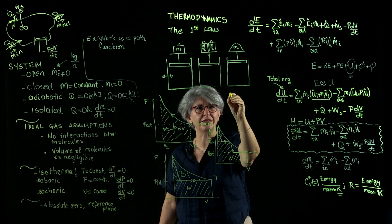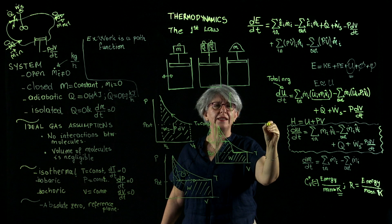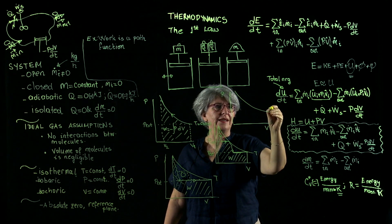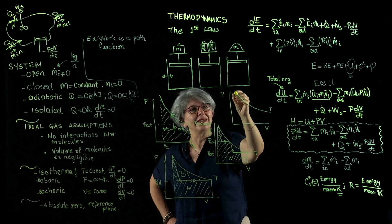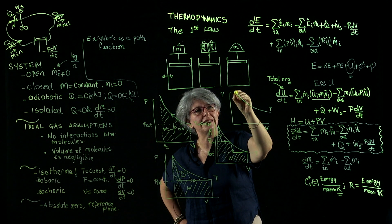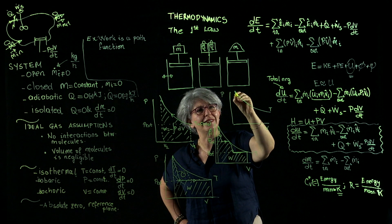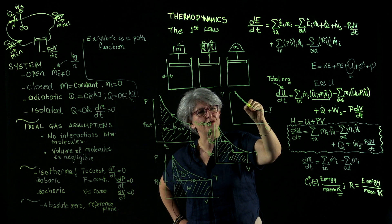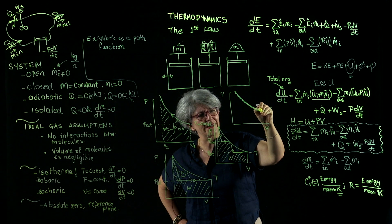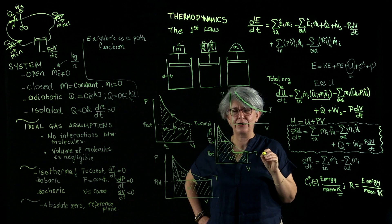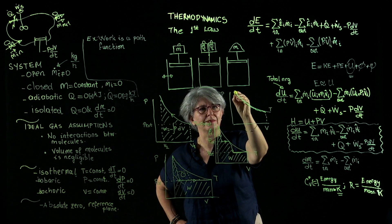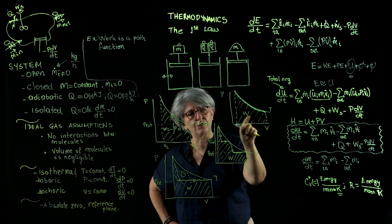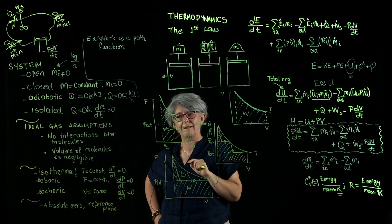The third situation is removing the weight in infinitely small installments. Again, this is my external temperature isotherm. I remove one grain — system equilibrates. One grain — system equilibrates. One grain — system equilibrates. I am in the vicinity of my isotherm, doing this process so slowly that I am almost at thermal equilibrium throughout. My work is almost equal to the ideal isothermal situation.